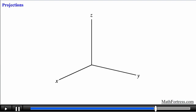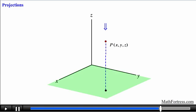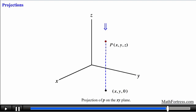Another concept that requires an understanding of these coordinate planes is the idea of a projection of an object onto one of these planes. Let's talk about the projection of a point on the coordinate planes. Say we have a random point P whose coordinates are (x, y, z). If I shine a light directly above this point it will create a shadow in the x-y plane directly below point P. This is called the projection of P on the x-y plane. This point has the same x and y coordinates as point P but has a z coordinate of 0. We denote the projection of P on the x-y plane as point Q with coordinates (x, y, 0).